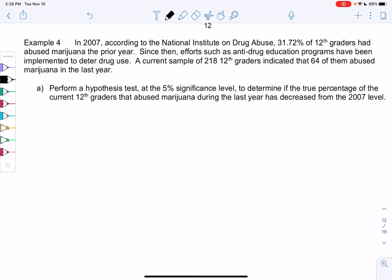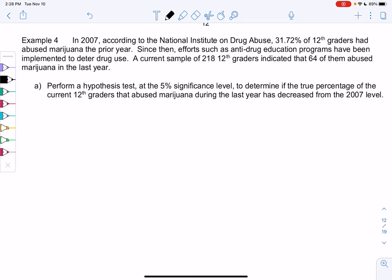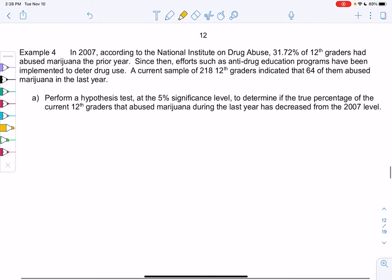Section 9-2, example 4. Some more hypothesis testing. In 2007, according to the National Institute of Drug Abuse, 31.72% of 12th graders had abused marijuana the prior year. So, this sounds like an old or claimed value, 31.72. That'll be my hypothesis at some point. It also sounds like we're in proportion land because we're doing abused marijuana or not as a variable, and a percent is a big hint towards proportions.